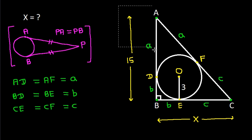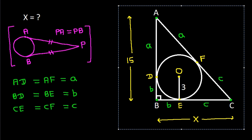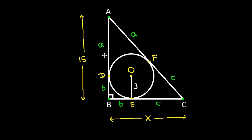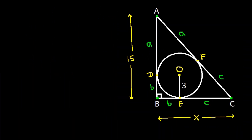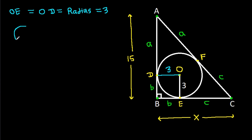Now, OE will be equal to OD, which is the radius, that is 3. And in any circle, the radius and tangent are perpendicular to each other. So this angle will be 90 degrees, and this angle will also be 90 degrees.